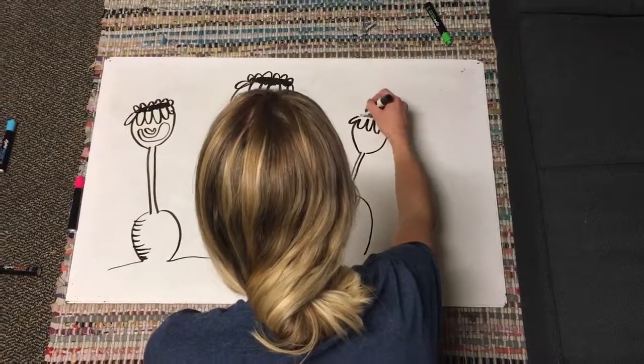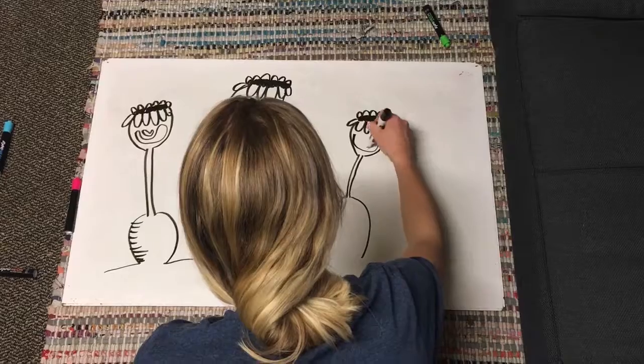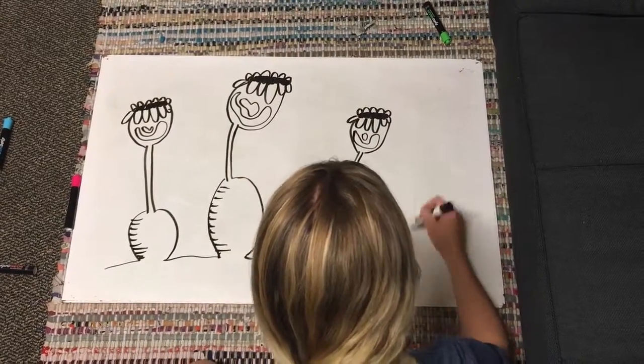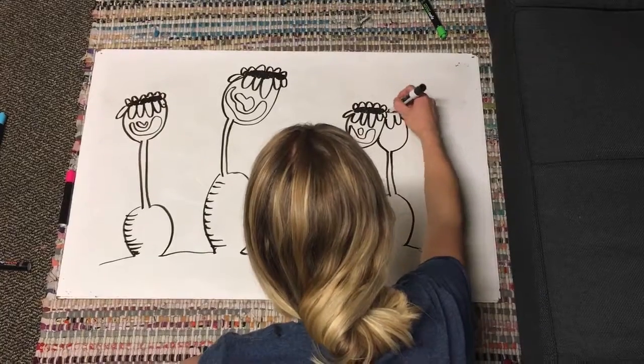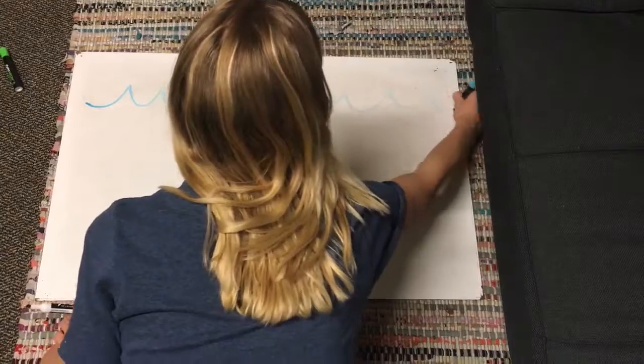They have a pseudocoelomate body cavity with a U-shaped gut, and their body cavity functions as a hydrostatic skeleton. They have no circulatory system or gaseous exchange organs, and their nervous system is a central ganglion. In addition, they contain no excretory system.